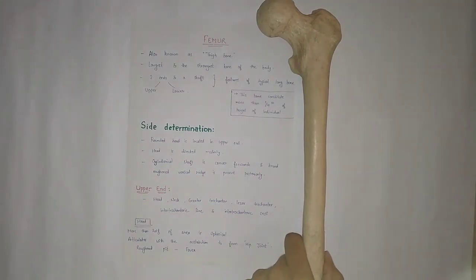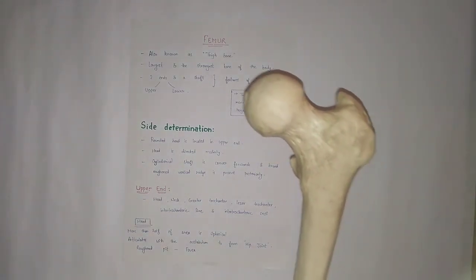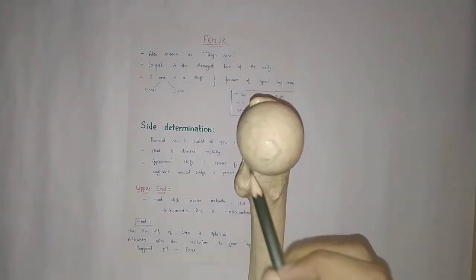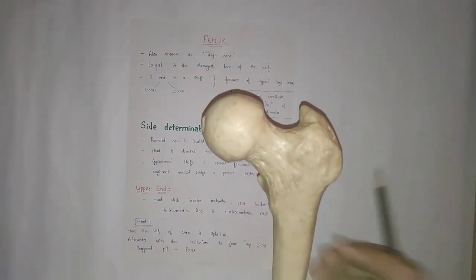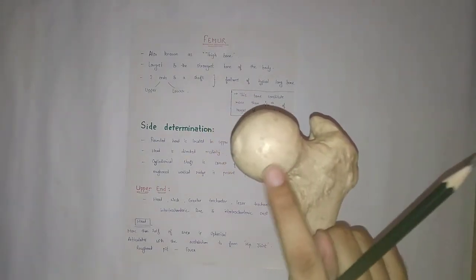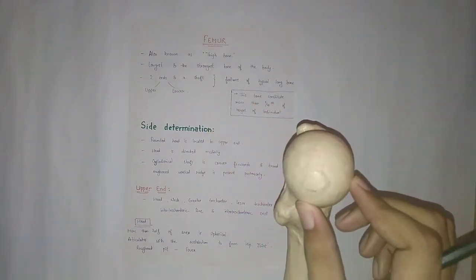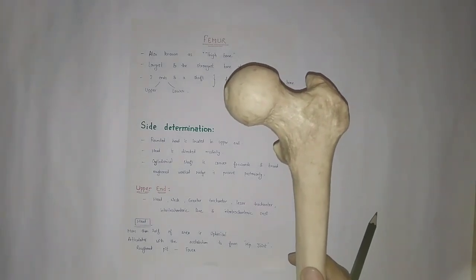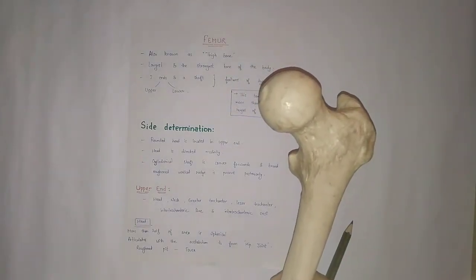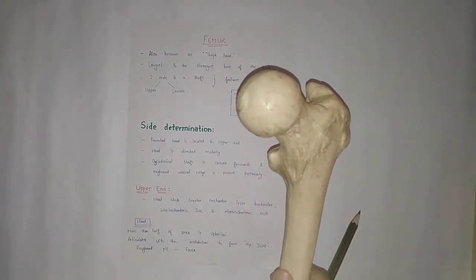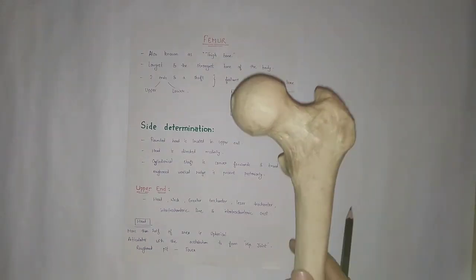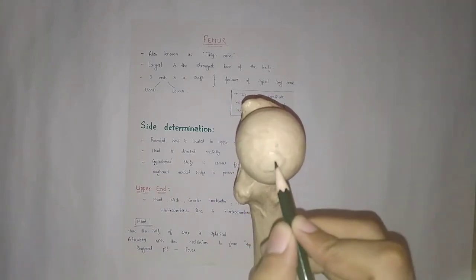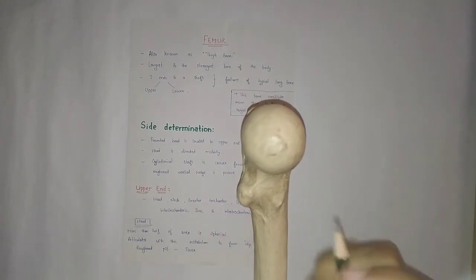Now let's discuss the general features of the femur, starting with the upper end. The head is smooth and articular, covering more than half a sphere. The head is directed medially, upwards, and forwards. This is the anatomical position of the left head of femur. At the center of the head, the fovea is present — a depression where the ligamentum teres is attached.